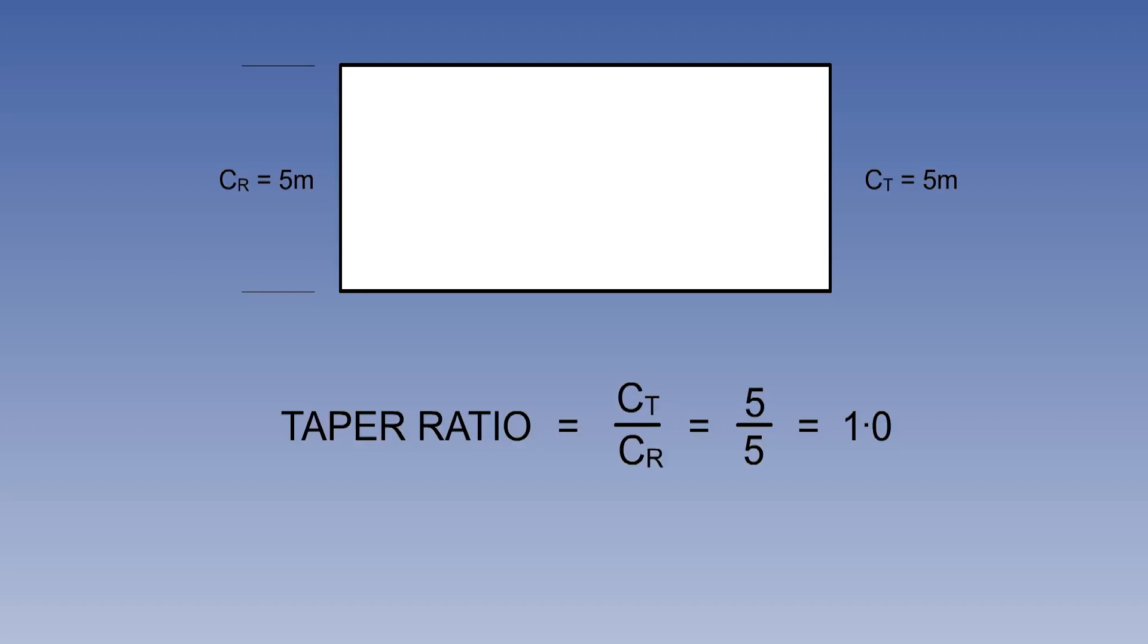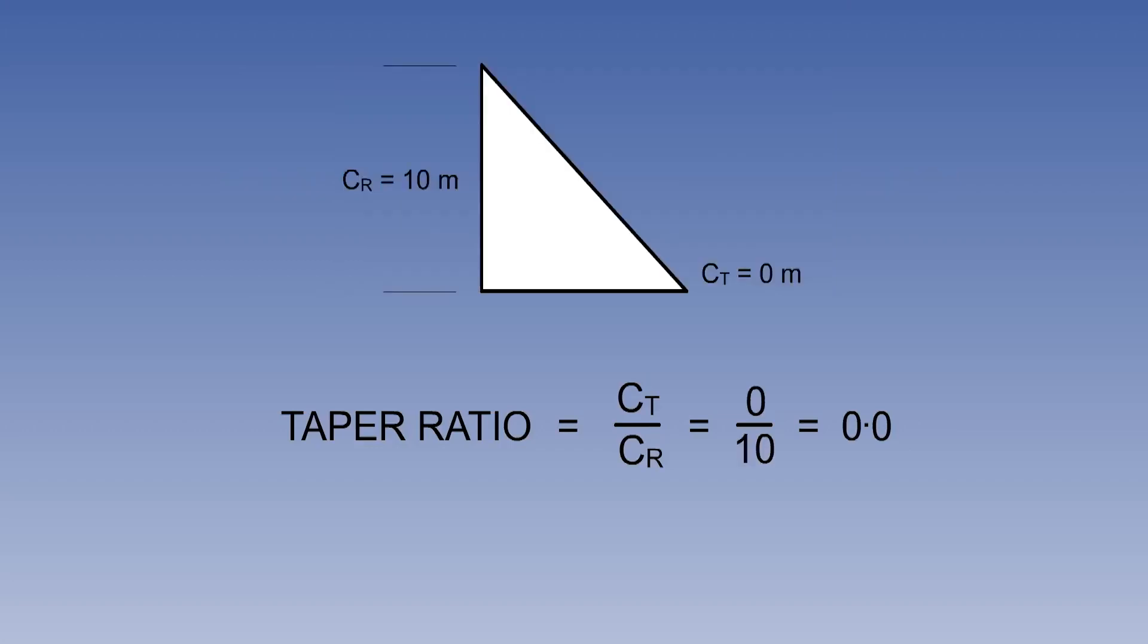The taper ratio affects the lift distribution and the structural weight of the wing. Ratios range from 1 for a rectangular wing to 0 for a delta wing with a pointed tip.